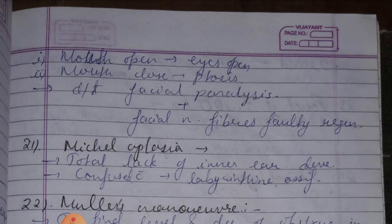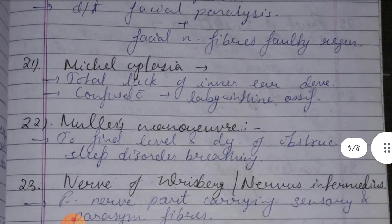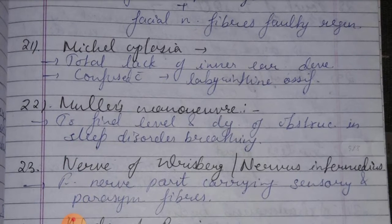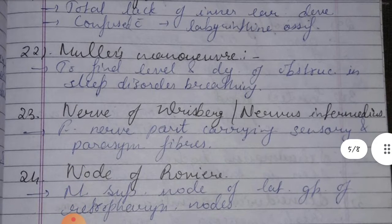Twenty-first is Mondini aplasia — used to find the level and degree of obstruction in sleep disorder.